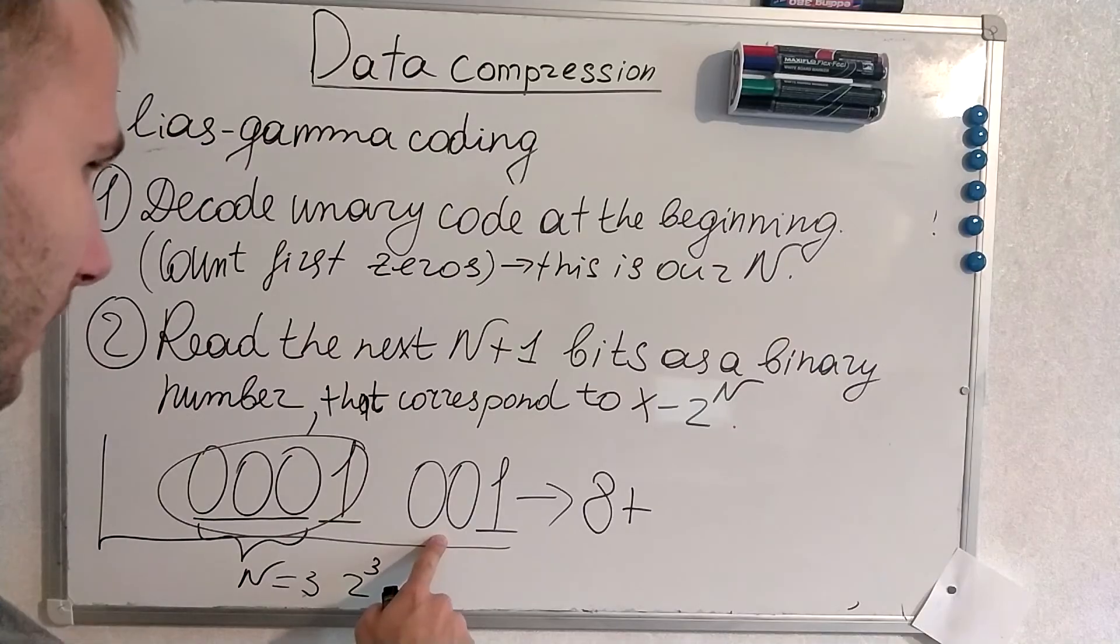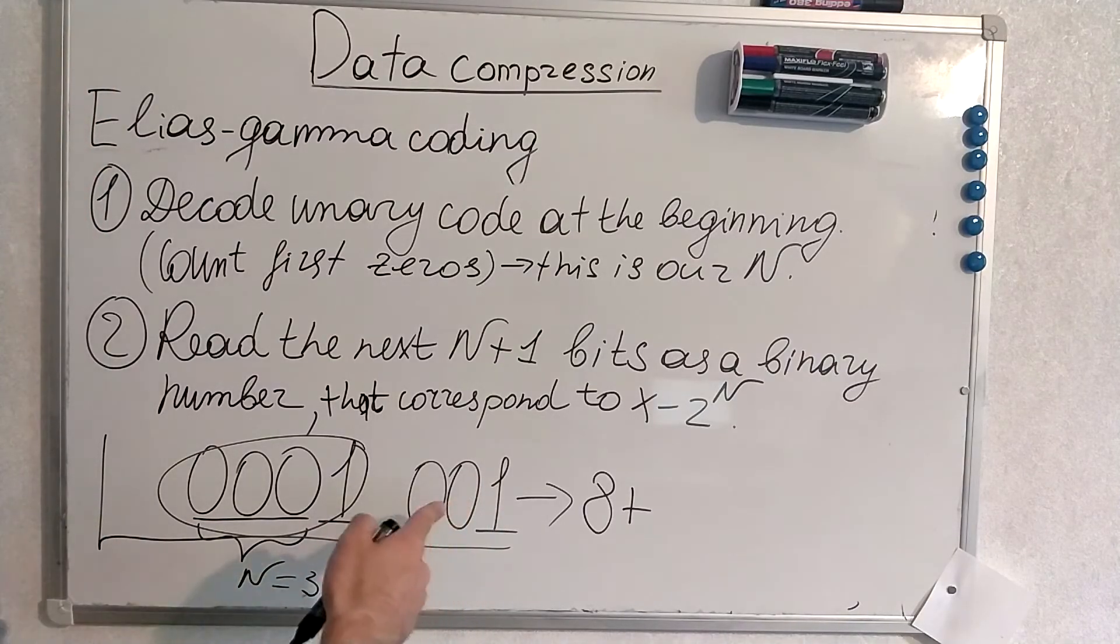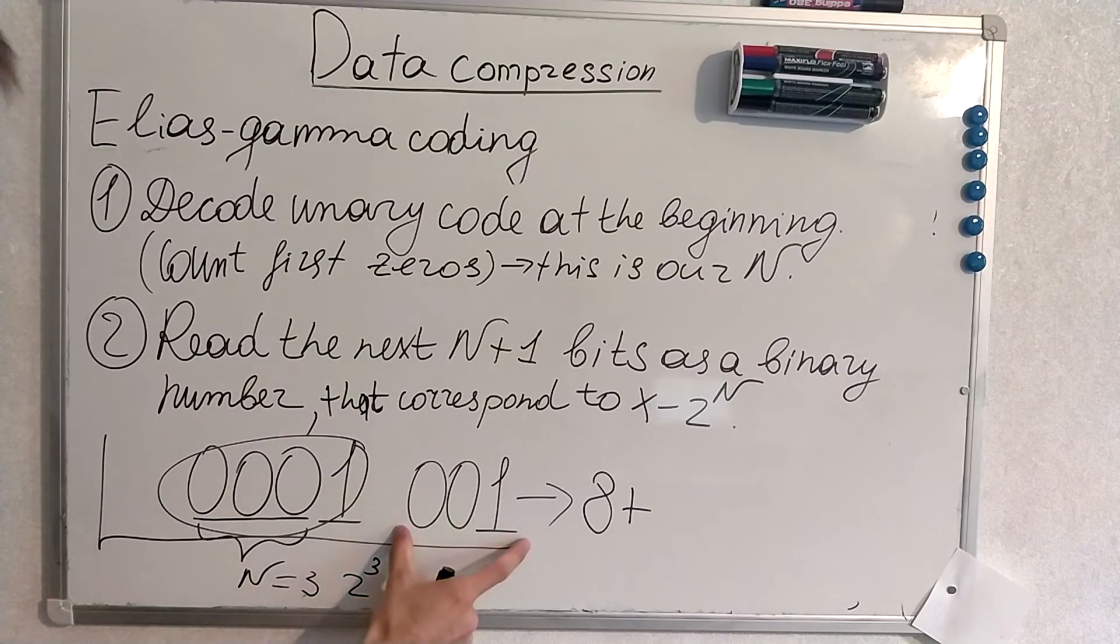And what is that? We know that N is 3 and this is a binary number. This binary number has this structure because it has to contain at least three digits, because N is 3.